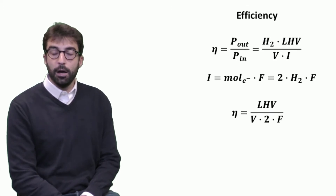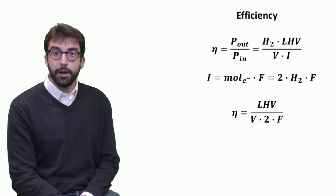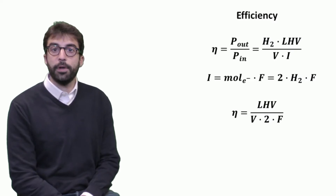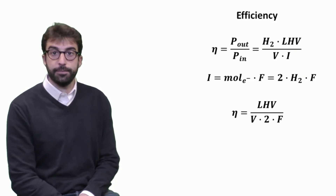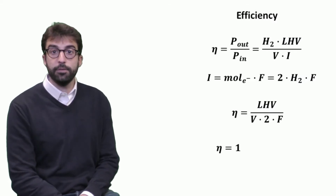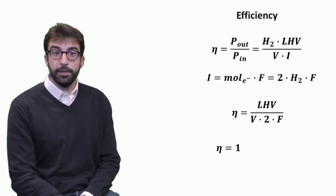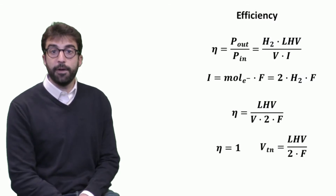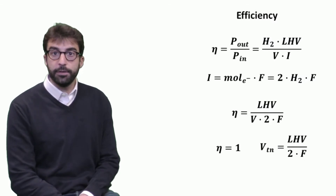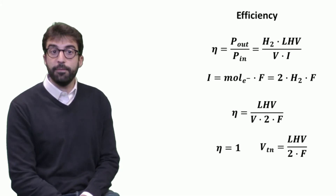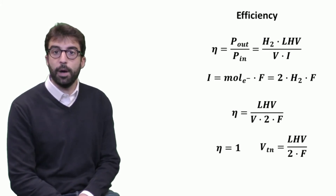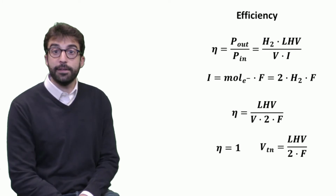This means that efficiency can be directly related only to the operating voltage of the electrolyzer. We can make a further theoretical step and see what reference corresponds to a hypothetical efficiency of one. If we fix the efficiency at one, we can define a new parameter called the thermoneutral voltage, which is the ratio between the lower heating value and twice the Faraday constant.